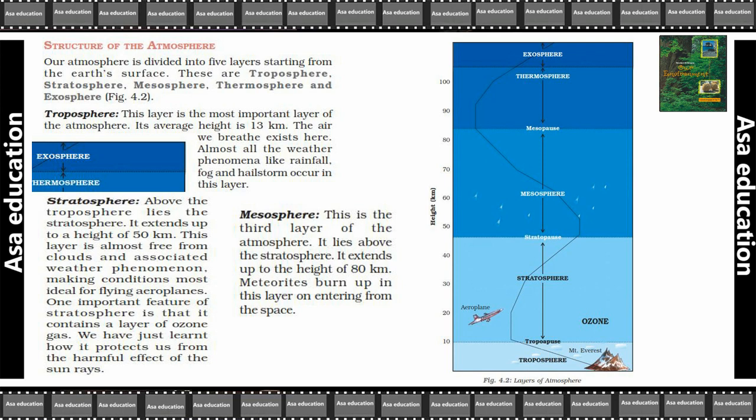The ozone layer protects us from the harmful effects of sun rays. Mesosphere is the third layer of the atmosphere. It lies above the stratosphere and extends up to a height of 80 km.